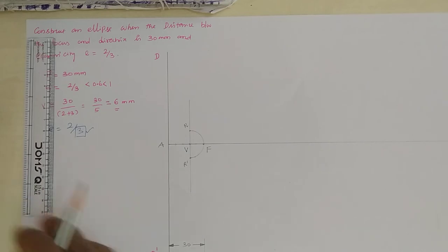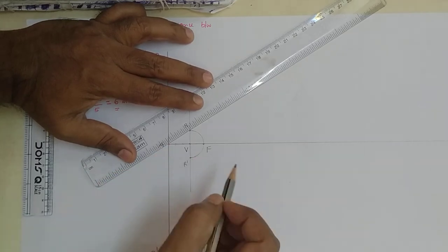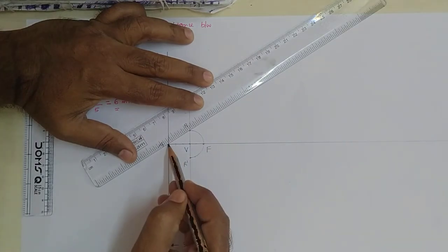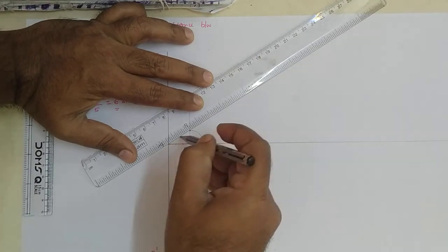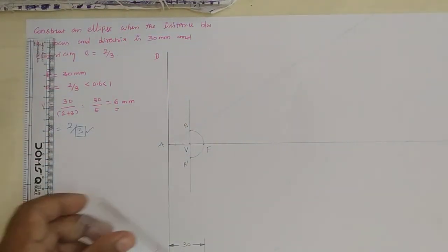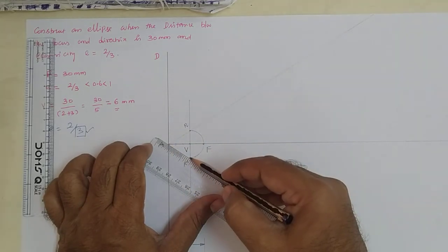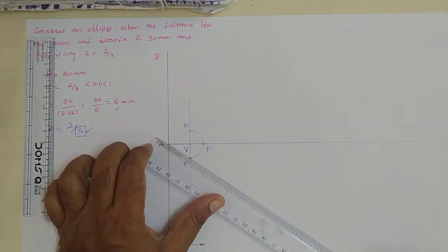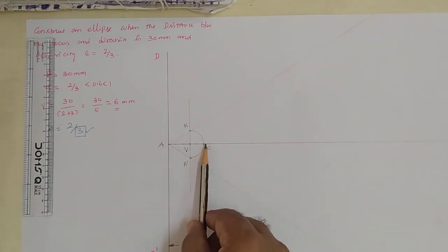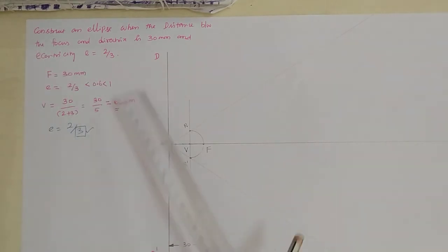Next step, join A to R and A to R' with light lines. The difference between dark lines and light lines is very important — only then will the drawing come out neatly. So from A through R, draw one inclined line, and similarly draw A to R' in the downward direction. After this, we mark the vertex point, focus point, R, R', A, and directrix based on the given data.